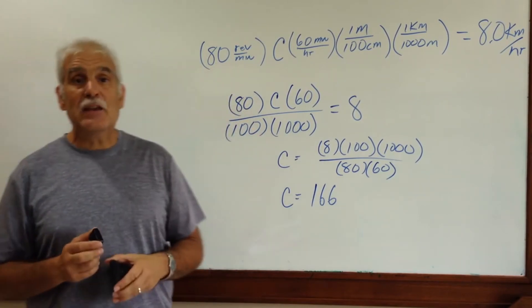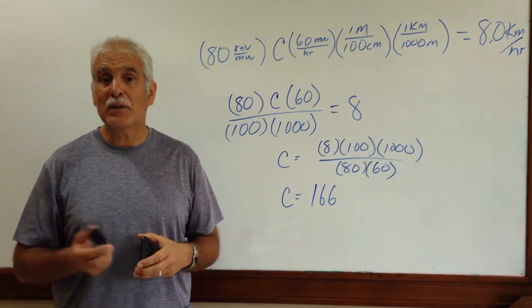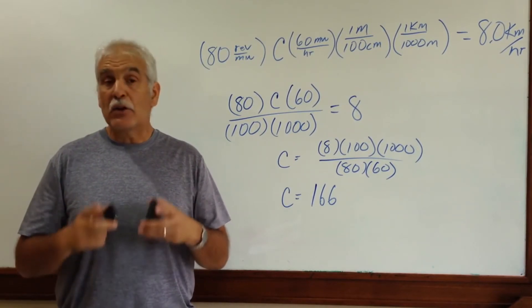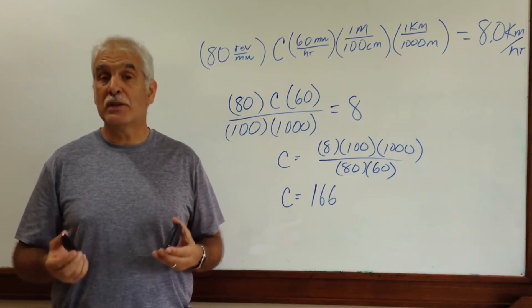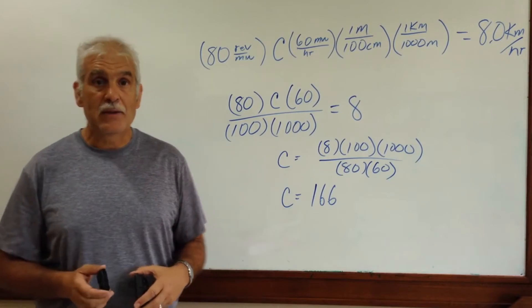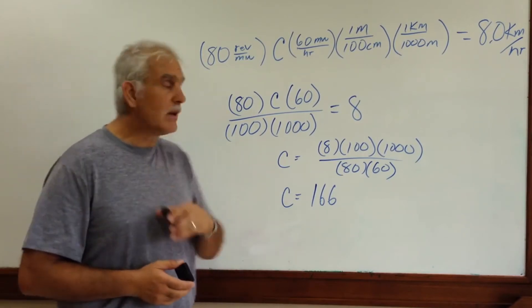So an 80 revolutions per minute cadence, I'm going to dial this in to be 8 to 9 kilometers per hour. Now, to do the math, I've just chosen one of these numbers. It could be any number or even x if you remember high school math. But I'm just going to do this conversion.